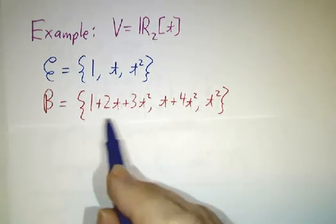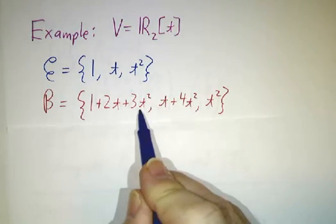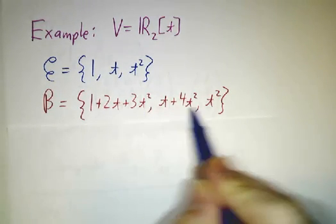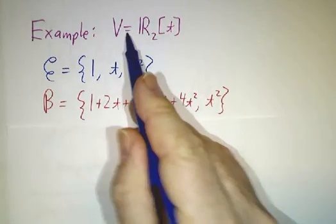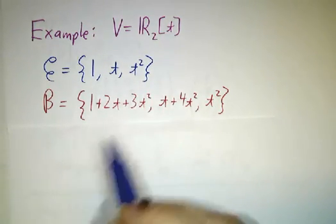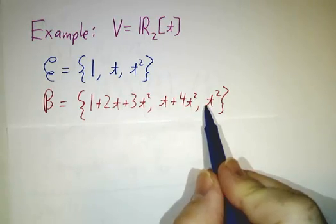Or e rather than d. The b basis will be 1 plus 2t plus 3t squared, t plus 4t squared, and t squared. They're all vectors in v, that is to say they're all quadratic polynomials. They're linearly independent. They span. They form a basis.